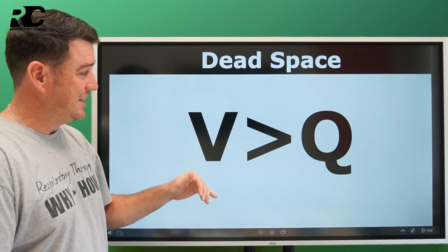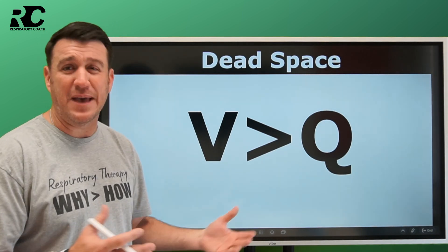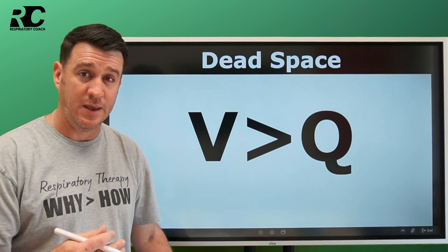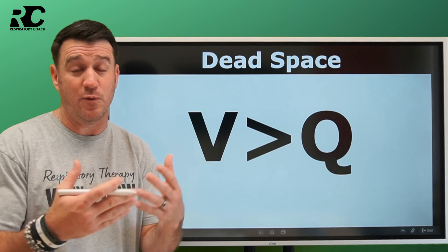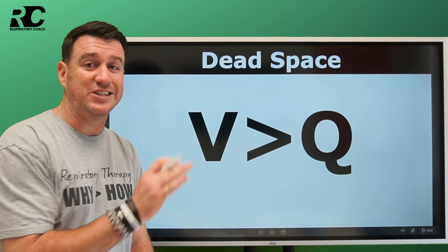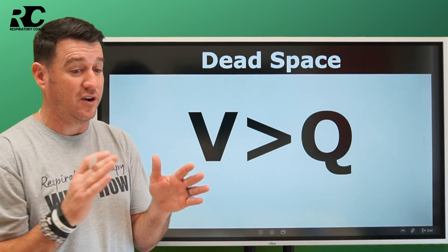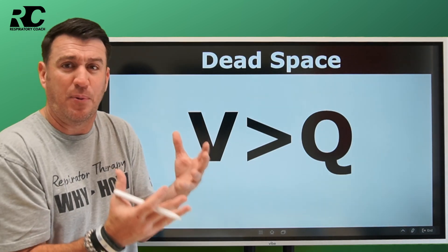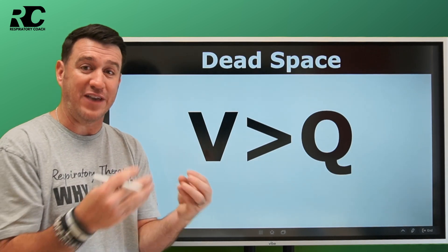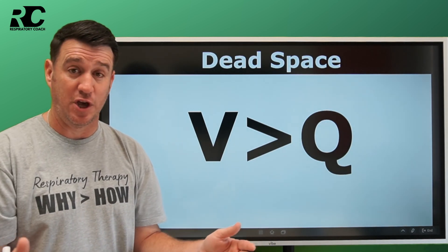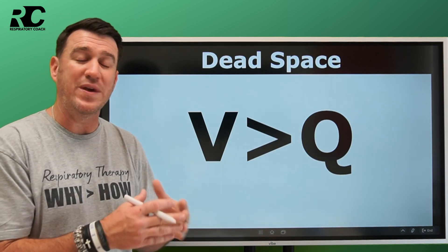Dead space is any situation where ventilation exceeds perfusion. Ventilation refers to gas movement; perfusion refers to blood flow. For oxygen we breathe in to find its way into pulmonary circulation and out to systemic circulation, we need an interface where blood through the pulmonary capillaries can interact with the ventilation happening within the alveolar units. When they match, we have a good V/Q ratio. When ventilation exceeds or has no perfusion, we have what we call wasted ventilation.